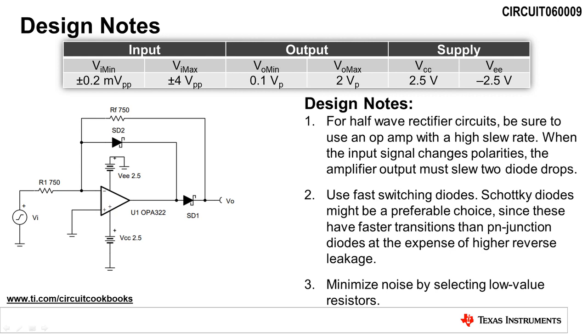Next, be sure to use fast switching diodes. Shockey diodes might be a preferable choice, since they have faster transitions than PN junction diodes, but this comes at the expense of higher reverse leakage. Finally, minimize noise by selecting low-value resistors.